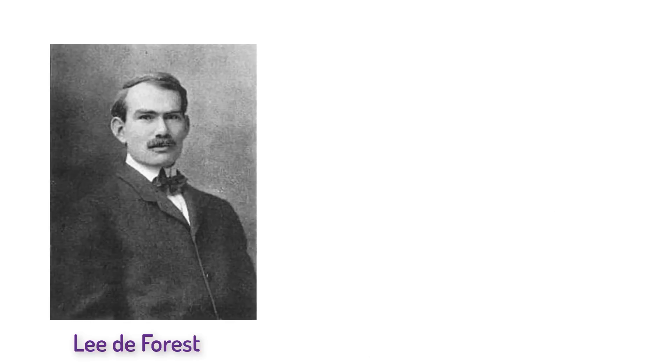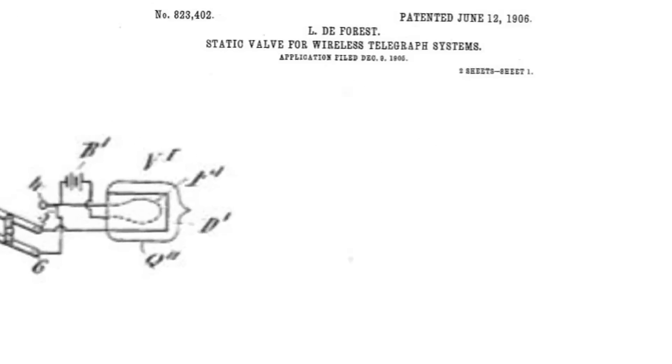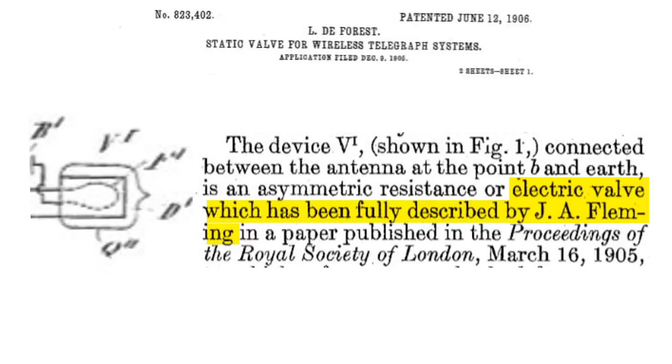However, one person was very interested in the Fleming valve and his name was Lee de Forest. At the time, Lee de Forest was being sued by Reginald Fessenden for copying his electrolytic detector. So de Forest was on the hunt for a new detector. We know de Forest had read about the Fleming valve because in December of 1905, de Forest filed for a patent that used what he describes as, quote, an electric valve which has been fully described by J.A. Fleming. Then five weeks later, de Forest files for a patent for a new detector that is strikingly similar to the Fleming valve.